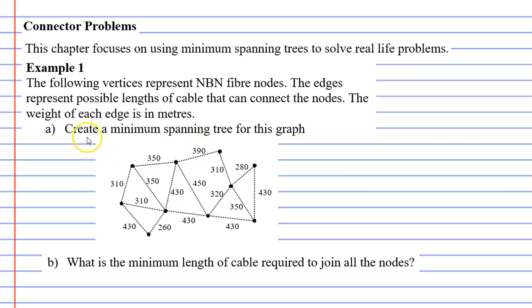Question A says create a minimum spanning tree for this graph. When I do this, I like to use Kruskal's algorithm and focus on the edges. The smallest edges I can see are the 260, so I'm going to connect two vertices with that edge, and the 280. I'm going to connect these vertices here.